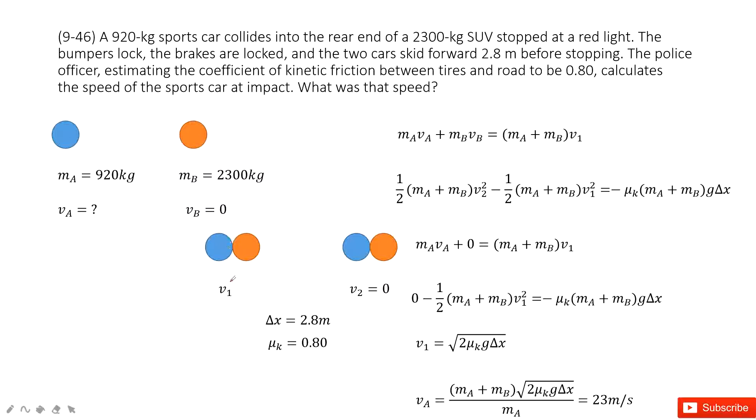And then these two objects just stick together, get the same velocity V1. And then they just move forward on this friction surface. And finally, rough surface and finally stops. And how much it moved together? The displacement is given. And the coefficient of the friction is given.